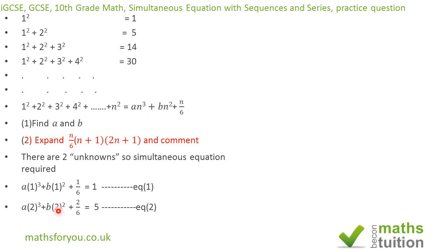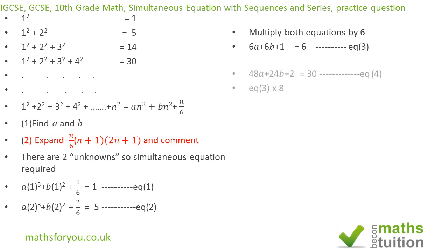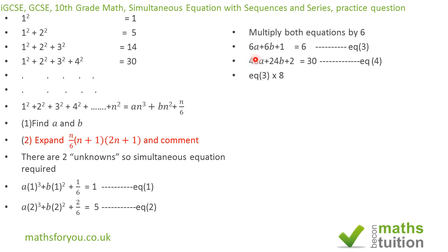If we multiply both equations by 6, the first equation becomes 6a plus 6b plus 1 equals 6 — that gives us equation 3. The second equation becomes 48a plus 24b plus 2 equals 30, because 2 cubed is 8 and 8 times 6 is 48, and 2 squared is 4 and 4 times 6 is 24 — that gives us equation 4.